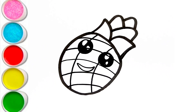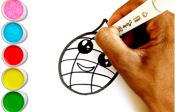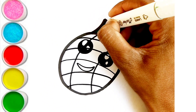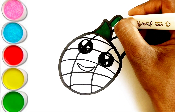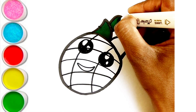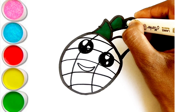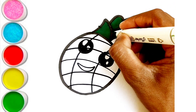E is for Elephant. E, E, Elephant. F is for Frog. F, F, Frog. G is for Goat. G, G, Goat. H is for Hand. H, H, Hand. I is for Igloo.